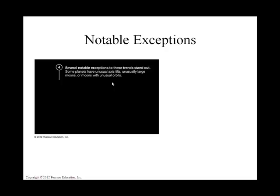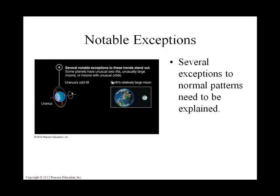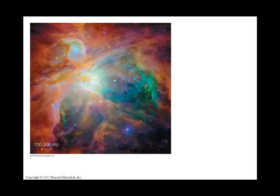We need to understand why we have those leftovers out there. We also need to explain a few exceptions: Earth has such a beautiful, large moon, and Uranus is tilted about 90 degrees — it basically lies in the plane of the ecliptic. We need to explain those with our model of solar system formation.